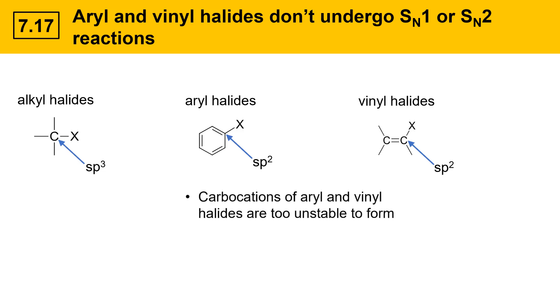Carbocations of aryl and vinyl halides are too unstable to form. This means they won't undergo SN1 substitution.